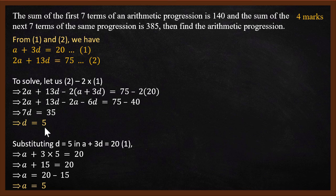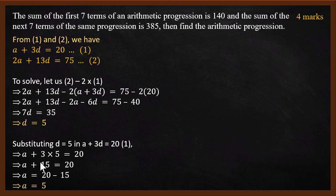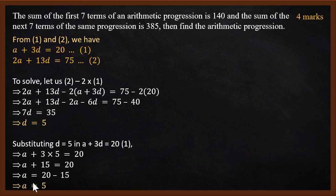Now, once we find the value of d, finding a is easy. We substitute d equals 5 into the first equation: a plus 3 times 5 equals 20, so a plus 15 equals 20, giving a equals 20 minus 15, which is 5. So a equals 5. We found both values: d equals 5 and a equals 5.